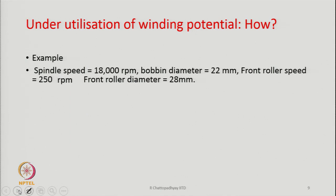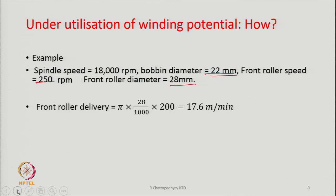Let us take an example in order to understand this. Spindle speed let us say is 18,000 rpm, bobbin diameter is 22 mm, front roller speed let us say 250 meters per minute, and front roller diameter is 28 mm. With this, the front roller delivery is going to be 17.6 meters per minute — that will be the delivery rate. We know the front roller speed and we know the diameter of the front roller, so we can find it out. This is the typical delivery rate from the front roller of a ring spinning machine, and it may vary between 15 to 20 meters per minute depending upon the yarn count and the kind of twist we are keeping in the yarn.